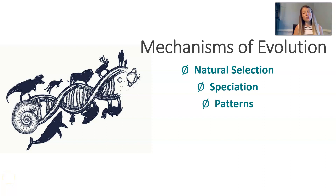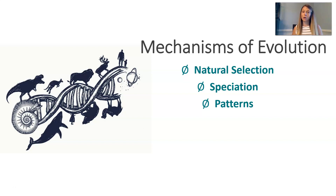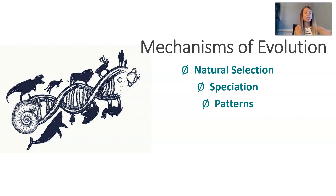Hey guys! So far we've talked about the guiding principles of evolution and some of the history there. We've looked at the evidence for evolution and how we use that to draw conclusions. Today we're going to dig a little bit deeper into natural selection and look at the mechanisms of evolution — natural selection, speciation, and some of the patterns we see in evolution through natural selection.